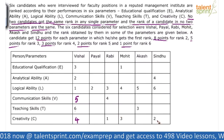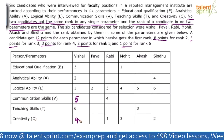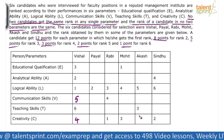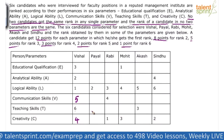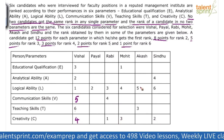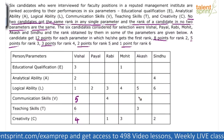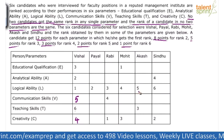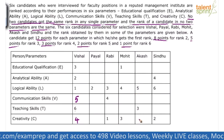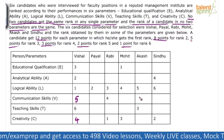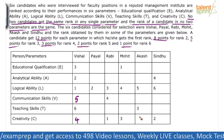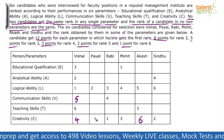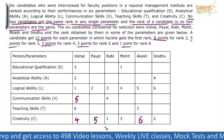Looking at the creativity row: values 1, 2, 3, 4 are already filled, so 5 and 6 are left. There is already a 5 in that column, so 5 cannot come there. Therefore 6 must come in that cell, and 5 goes in the other cell.